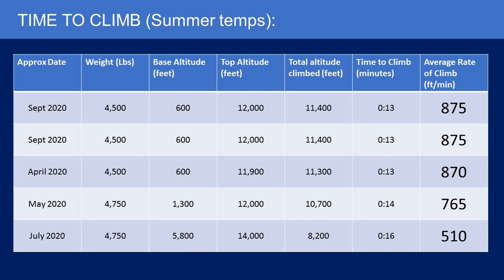The next flight is in April — slightly cooler. Almost 11,300 feet of altitude gain, and that one also took 13 minutes for an average rate of climb of 870 feet per minute. The May flight is a heavier weight; total altitude gain of 10,700 feet with an average climb rate of 765 feet per minute. The final flight is a mountain takeoff from Montrose, Colorado — we took off at almost 5,800 feet up to 14,000 feet, total altitude gain of 8,200 feet. That climb took 16 minutes starting at a higher altitude and at a fairly heavy weight, with an average rate of climb of 510 feet per minute.